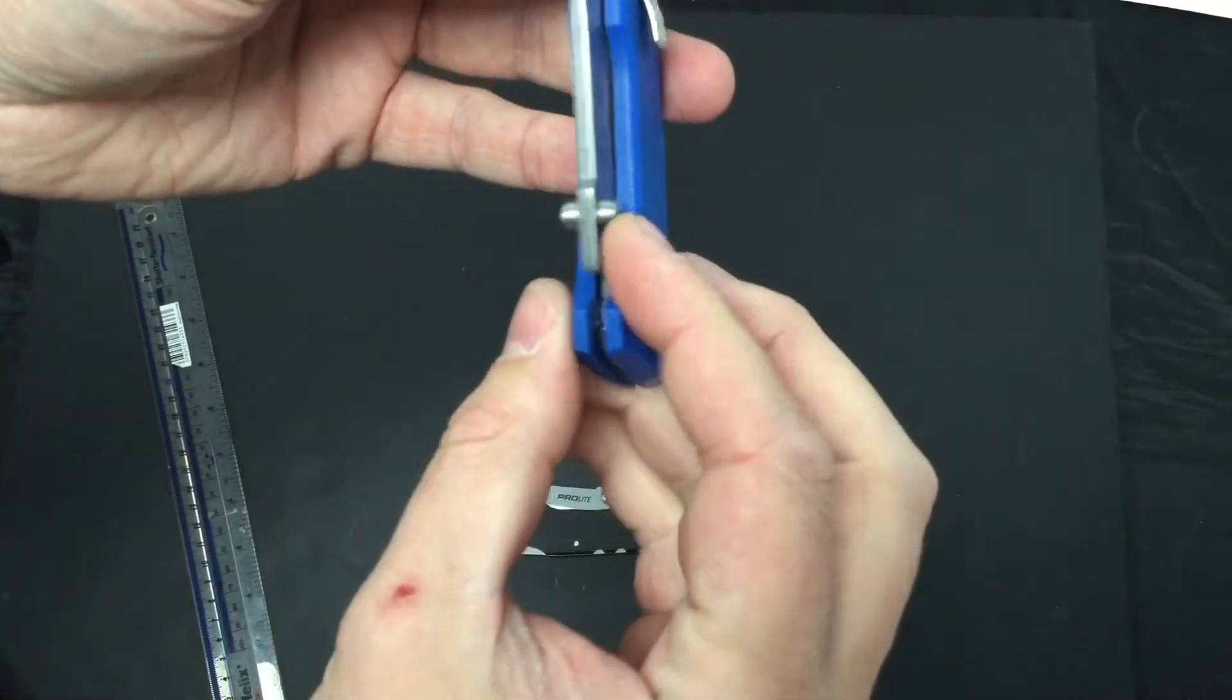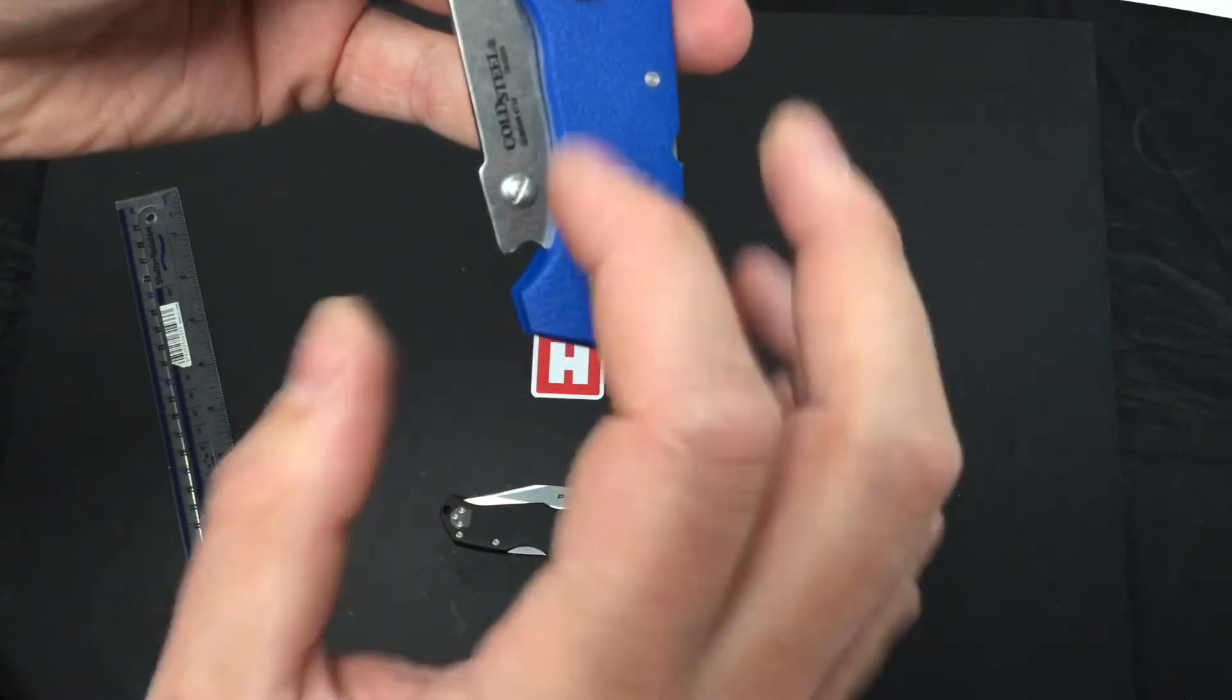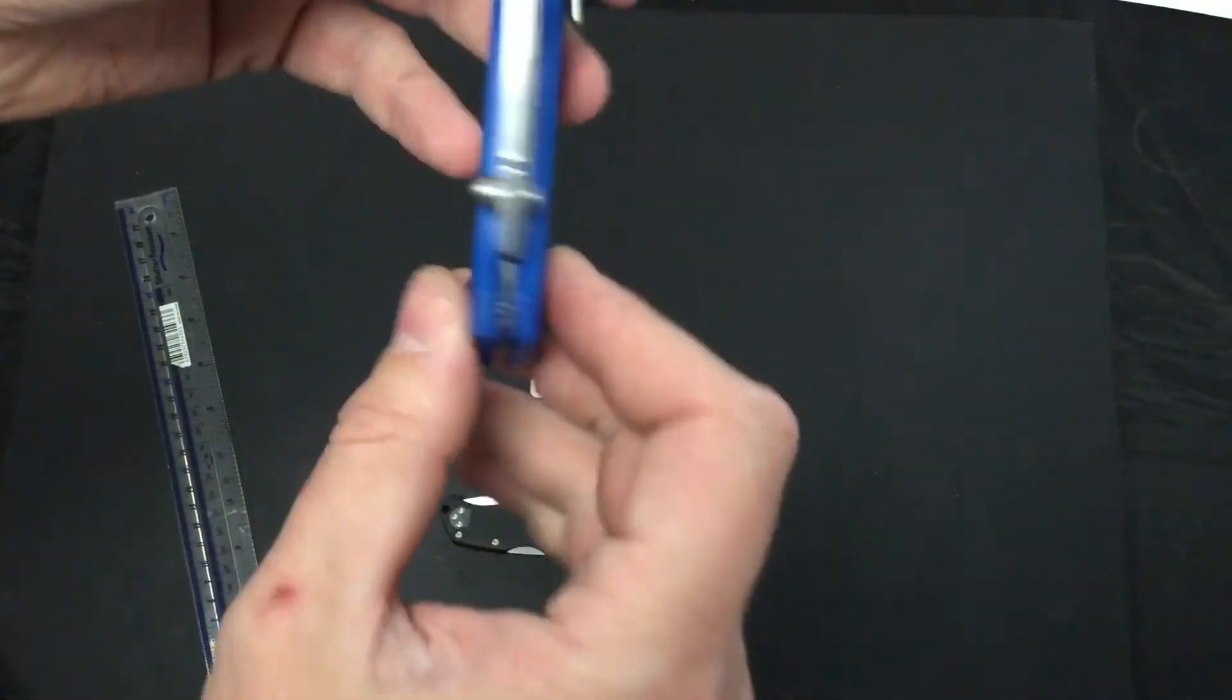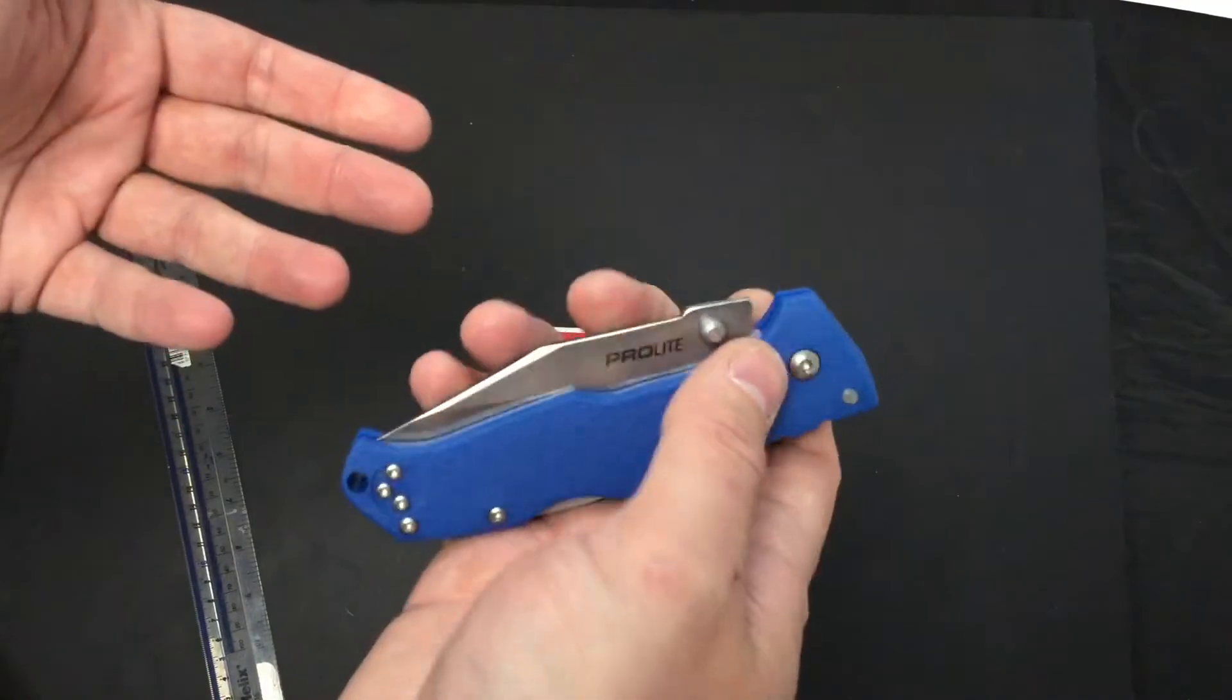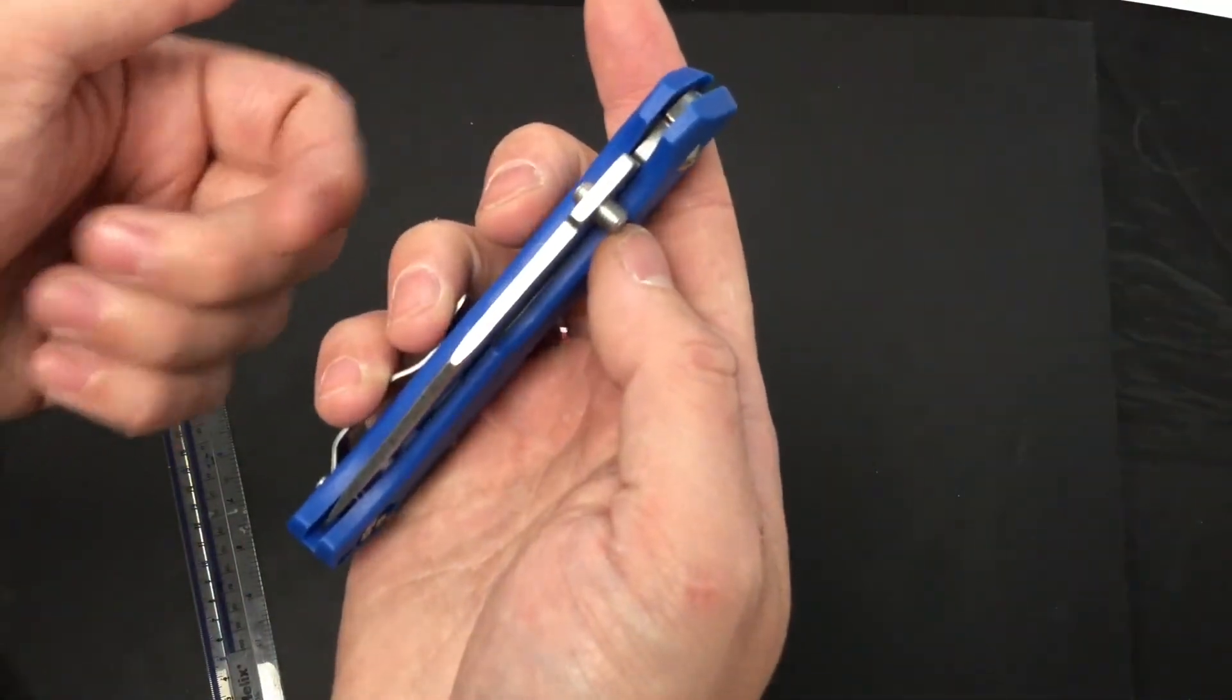The thumb stud on the knife, you can see, we've got a screwdriver slot in there. Simple - unscrew it, put it in the other way round, so you've got dedicated left hand use, because it does protrude larger for your right hand side.